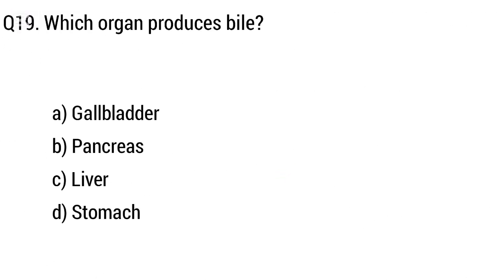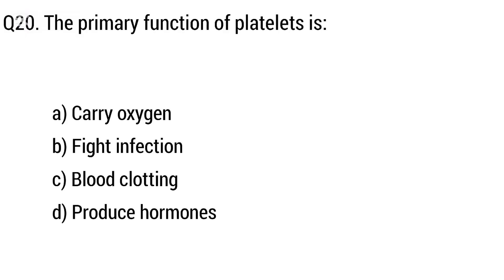Question 19. Which organ produces bile? Option A: Gallbladder, B: Pancreas, C: Liver, D: Stomach.